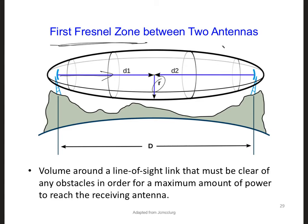is square root of d1 here times d2 divided by d and multiplied by lambda. So notice that the radius of the Fresnel zone is a function of the wavelength of the electromagnetic wave.